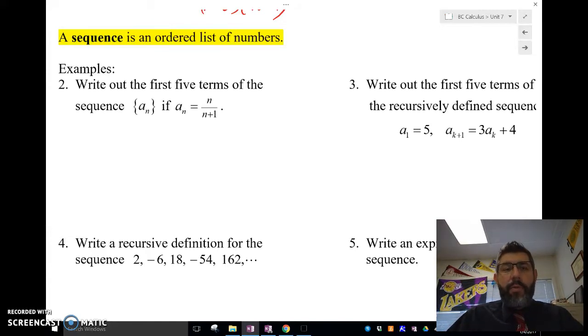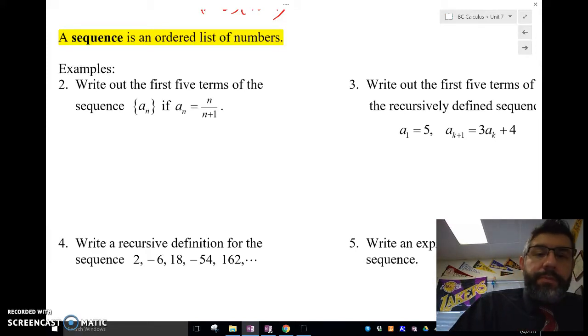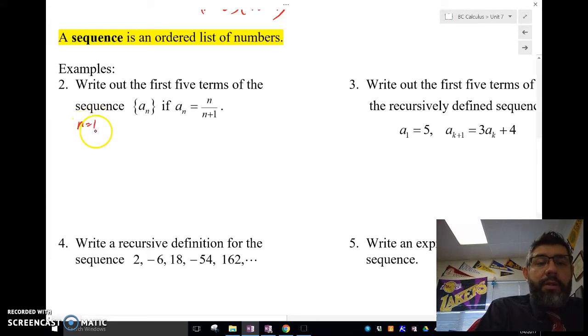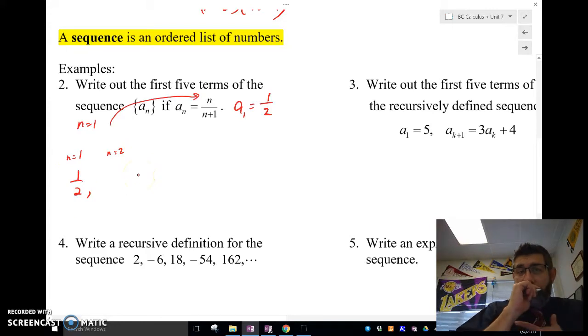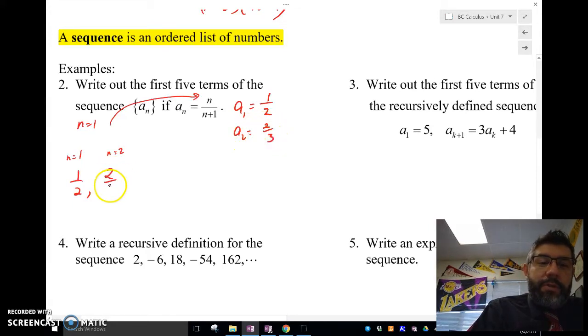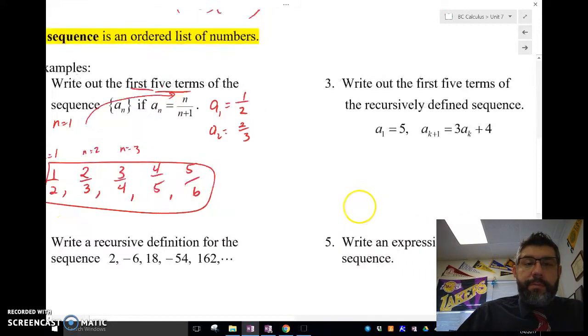Let's take a look at some examples here of how we would write these. Let's write out the first five terms of a sequence where we have a_n = n/(n+1). For the first five terms, we're always going to start out with n=1. So we're just going to go and plug in n=1 in there. And a_1 is going to be 1/(1+1) which is 2, so we're going to have 1/2. With n=2, we're going to have a_2 which is 2/(2+1) which is 3, which is 2/3. With n=3, we're going to have 3/4. n=4, that's 4/5. 5/6 and so on. We only wanted the first five terms, so we're going to leave it like that.